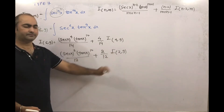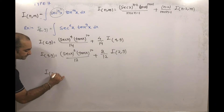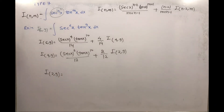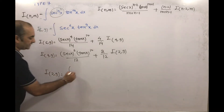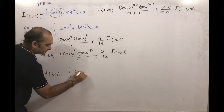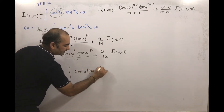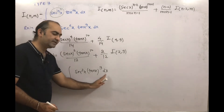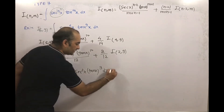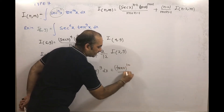Plus (4 minus 2) that is 2, divided by 12, and I(2, 9) will come. So I(2, 9) we have to find out. Integration of sec x squared into tan x to the power 9 dx — if we take tan x as t, then sec squared x dx will be dt.